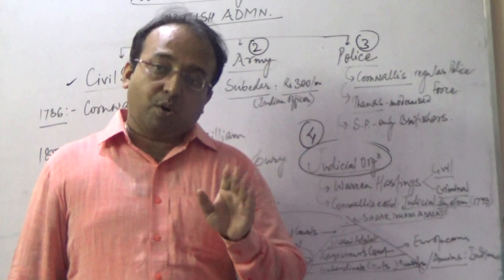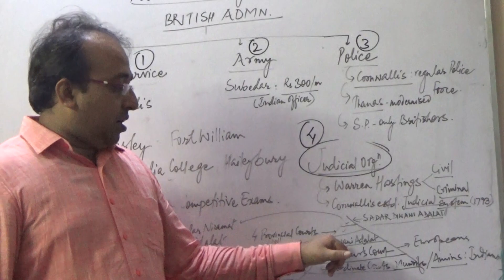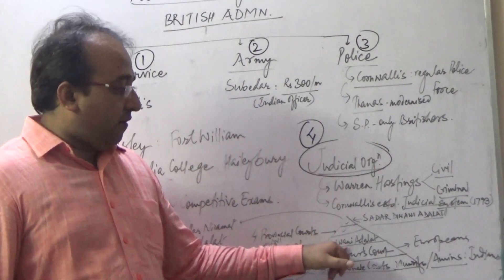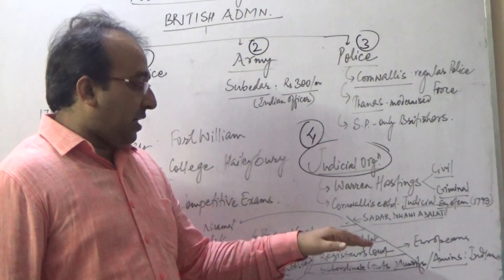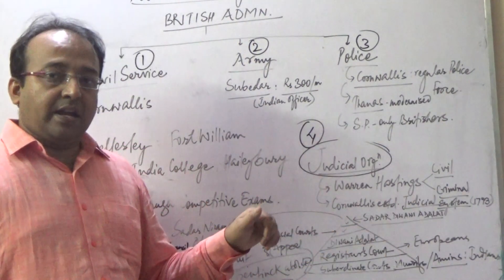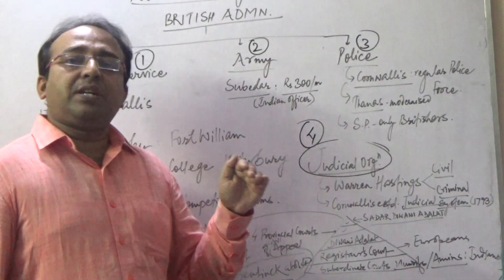The third category was Divani Adalat. Now, Divani Adalat was at the third rung of the hierarchy, so indirectly it was just like a district judicial system, you can say.